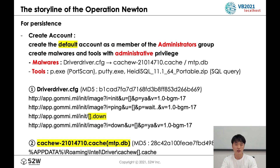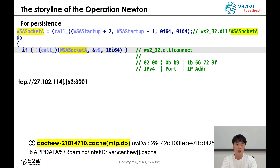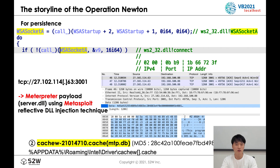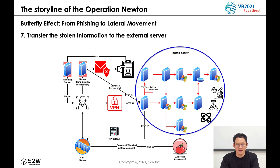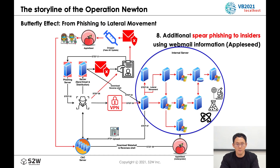The first malware installed is driver-driver.cfg, identified as AppleSeed. After that, a file called catcblabla.catc is downloaded. The downloaded catcblabla.catc downloads code through socket communication and executes it in memory. The malware finally executed was identified as a Metasploit Meterpreter making a reverse connection. In step seven, the attacker transferred compressed files containing various source code and research data from the controlled server to an external C2 server using the FTP protocol. In step eight, additional spear phishing to insiders uses webmail information and AppleSeed.